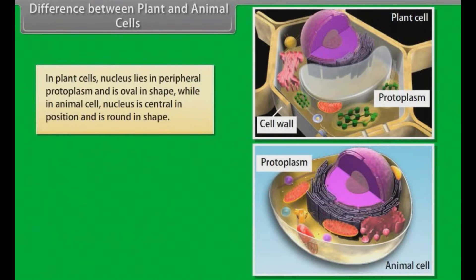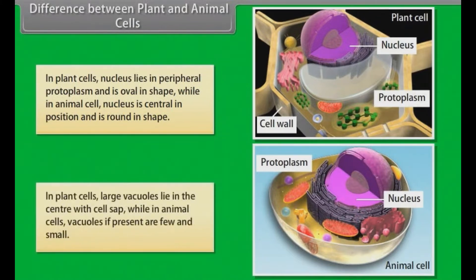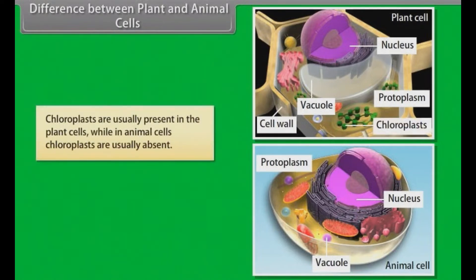In plant cells, the nucleus lies in the peripheral protoplasm and is oval in shape, while in animal cells, the nucleus is central in position and is round in shape. In plant cells, large vacuoles lie in the center with cell sap, while in animal cells, vacuoles, if present, are few and small. Chloroplasts are usually present in plant cells, while in animal cells, chloroplasts are usually absent.